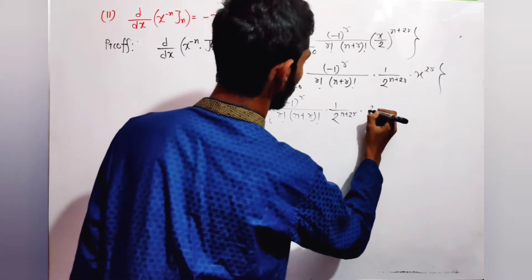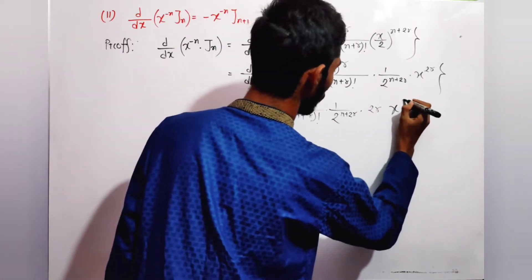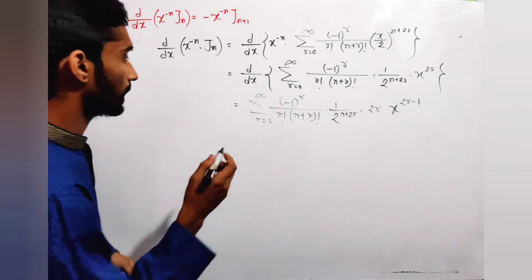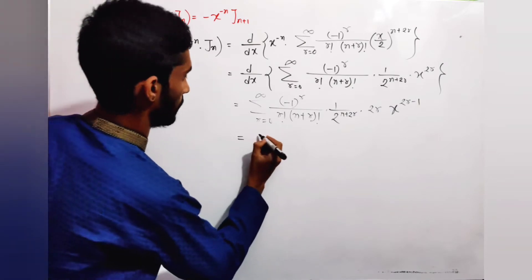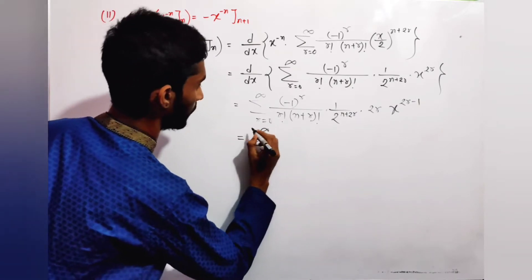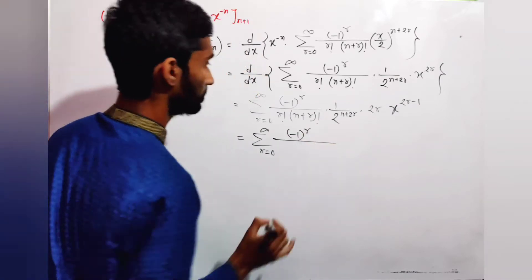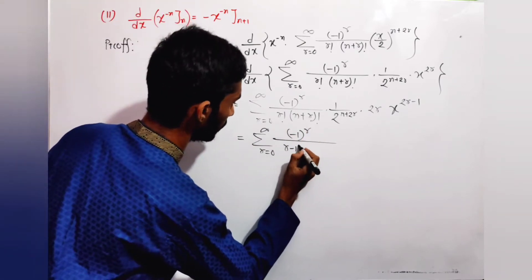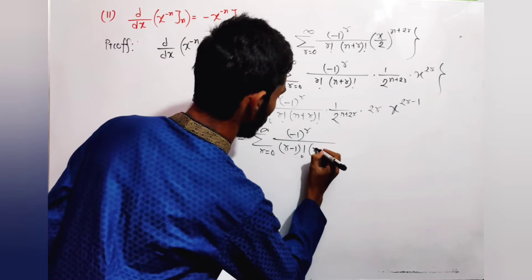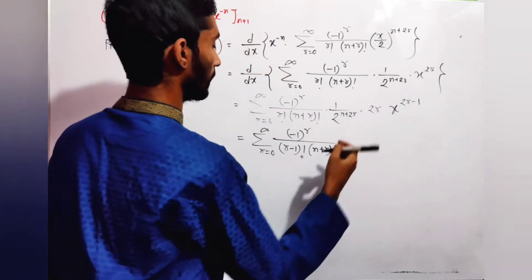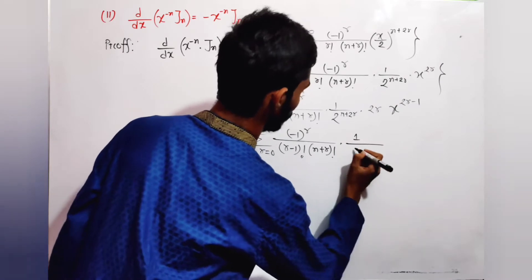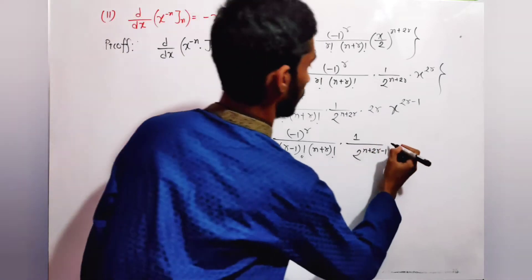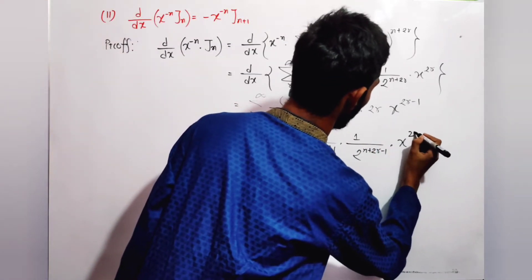Now differentiating term by term with respect to x, the power x^(2r) differentiates to give x^(2r-1), bringing down a factor of (n+2r). So each term becomes [(-1)^r · (n+2r) / (r! · (n+r)!)] · (1/2)^(n+2r) · x^(2r-1).